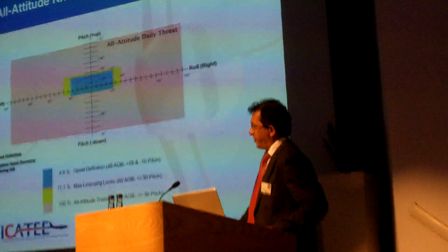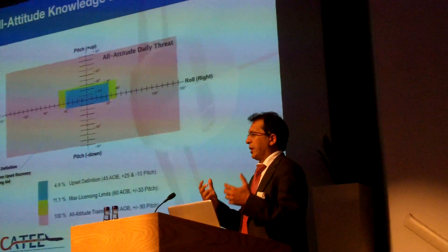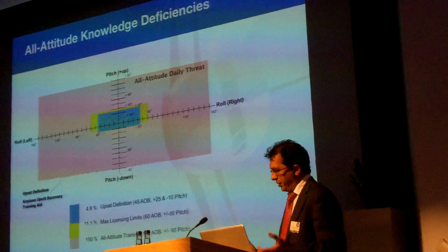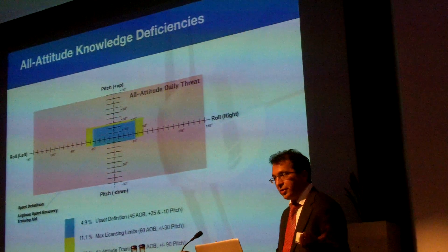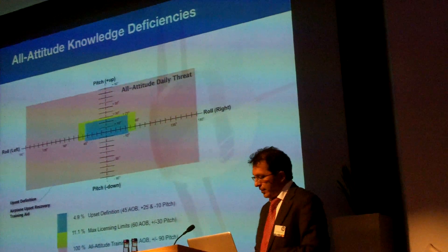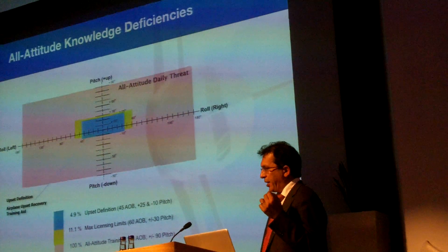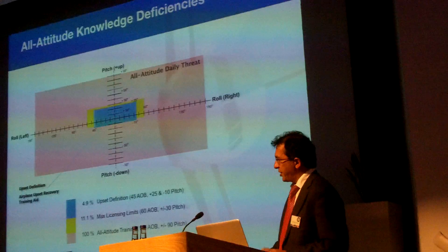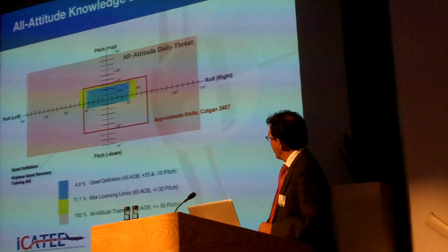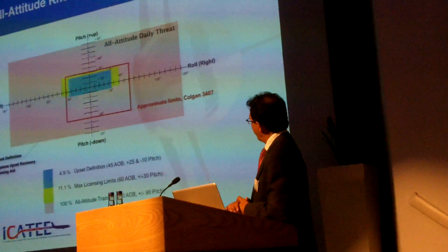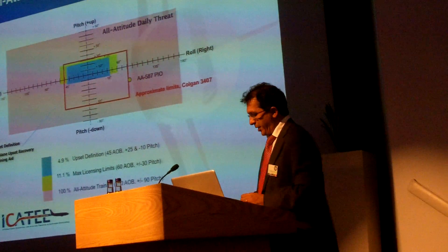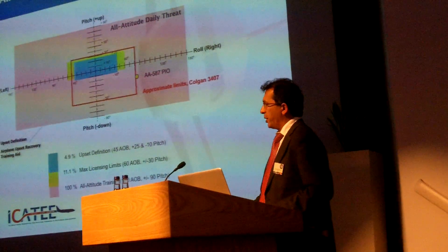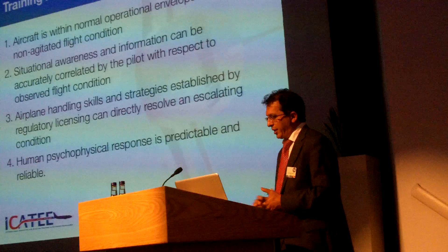Getting outside of the blue region may occur due to atmospheric disturbances, wake turbulence, stalls, control system failures, pilot-induced oscillation, and prolonged stalls as seen in the Colgan Air case. If you are an expert in the blue, it does not necessarily mean you will be an expert outside, and the licensing skills may make it worse. Looking at approximate limits of Colgan 3407 and American Airlines 587 where it entered PIO, these aircraft entered regions from which they did not recover.